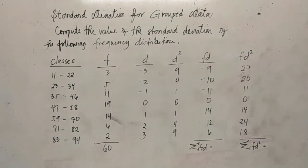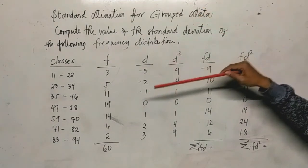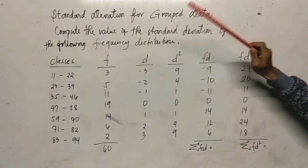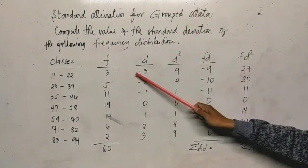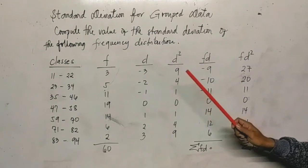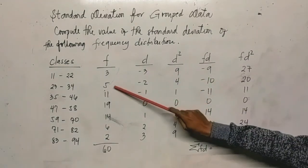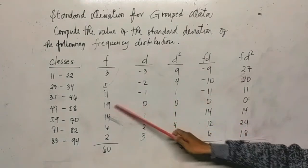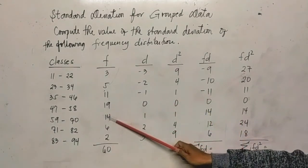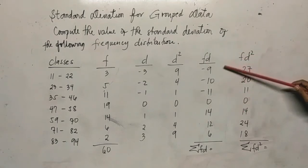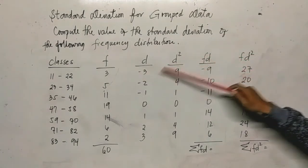Next, what else is in the formula? We need to get fd, which is the product of the frequency and deviation. So multiply the frequency by d. Three times negative three would be negative nine. Five times negative two is negative ten. Eleven times negative one is negative eleven. Nineteen times zero equals zero. Fourteen times one is fourteen. Six times two is twelve. And two times three is six. So we've now got the product of frequency and deviation.